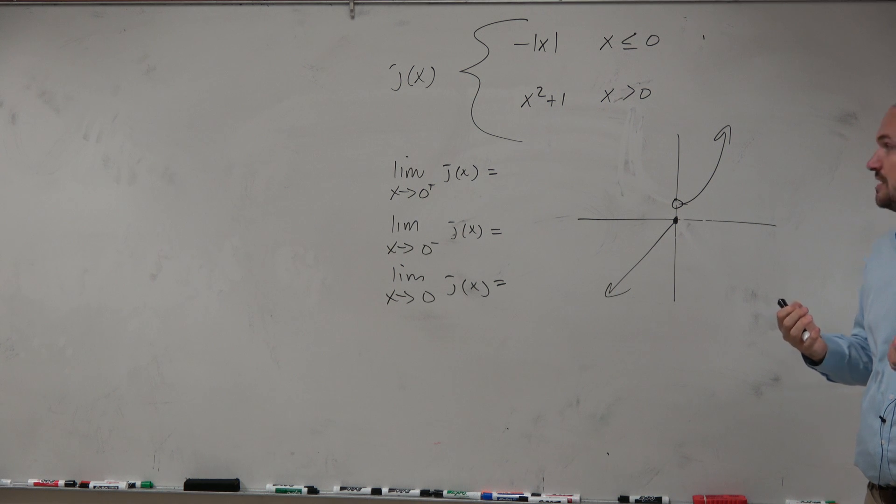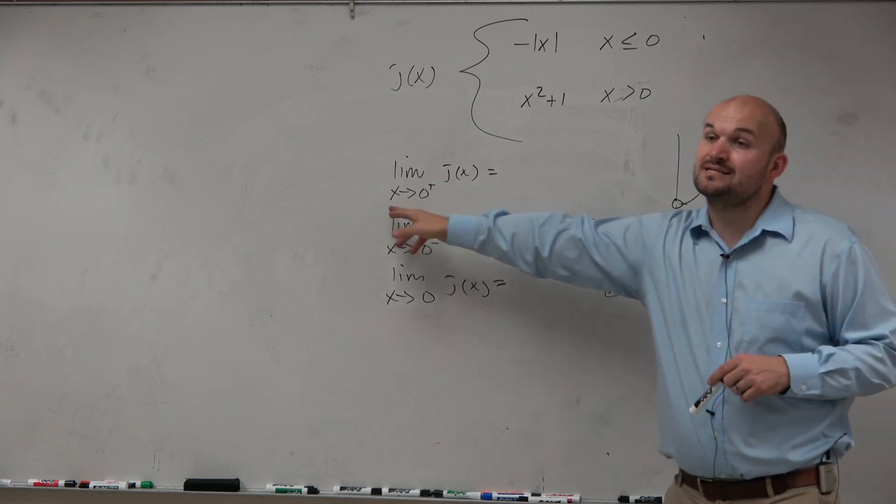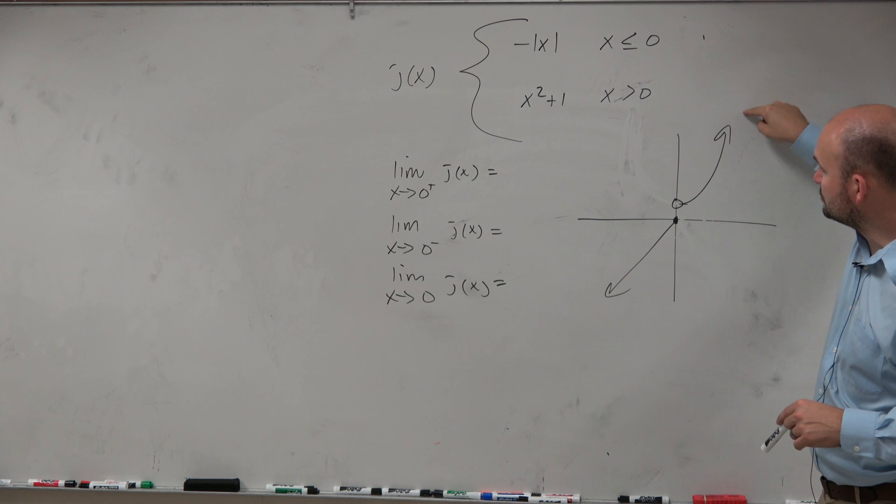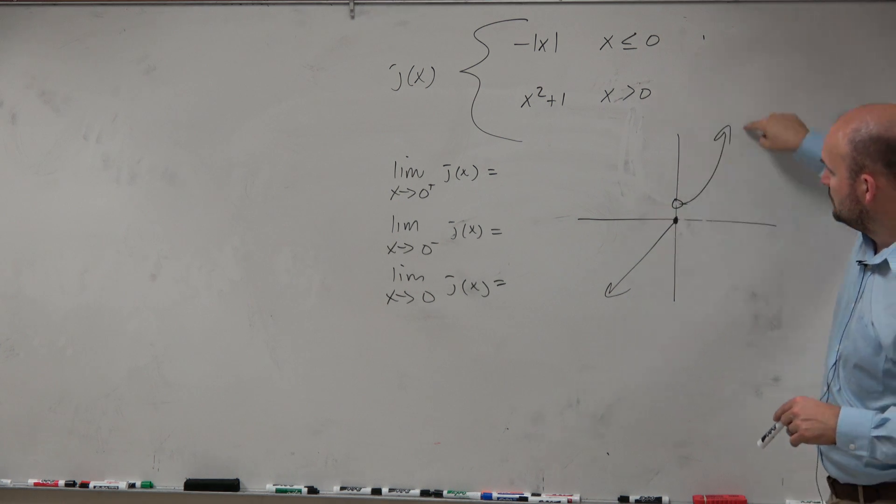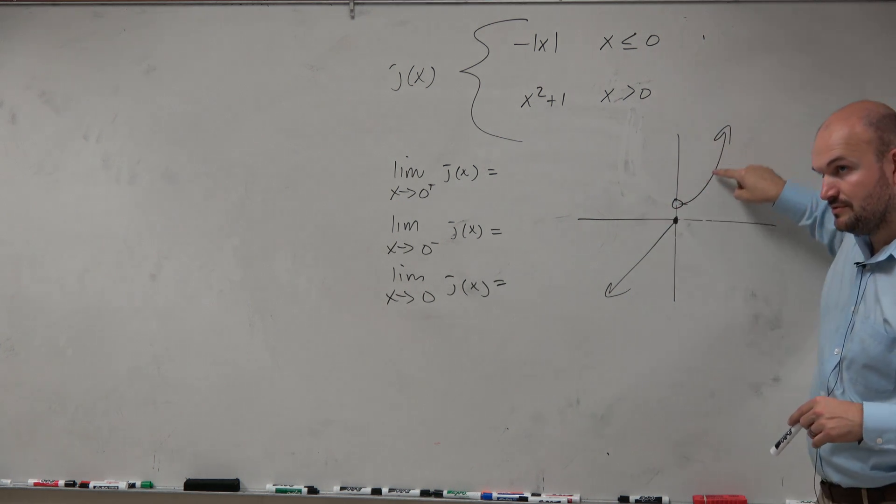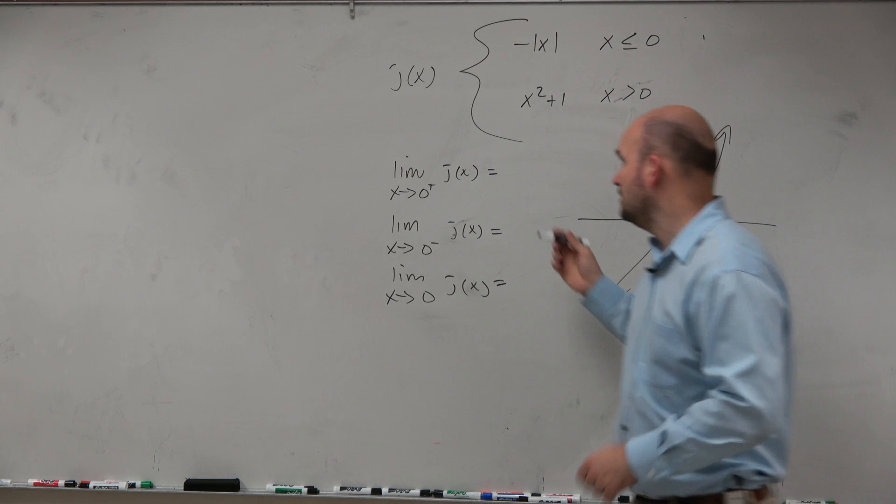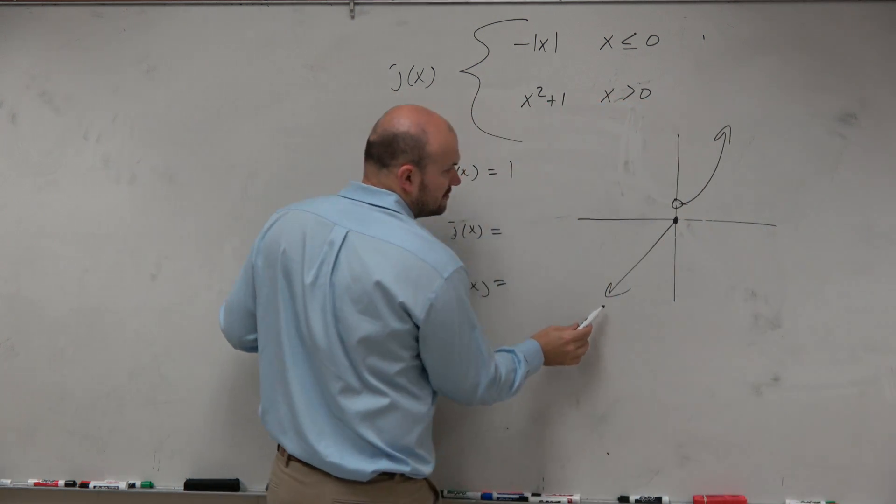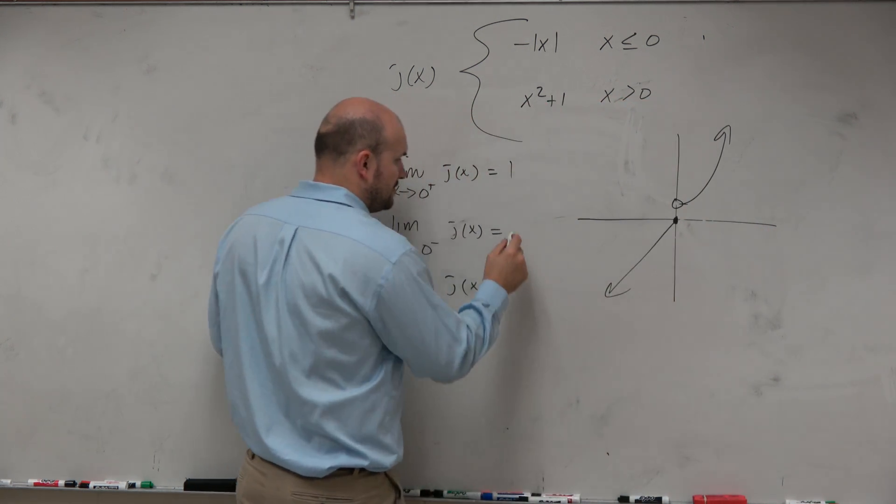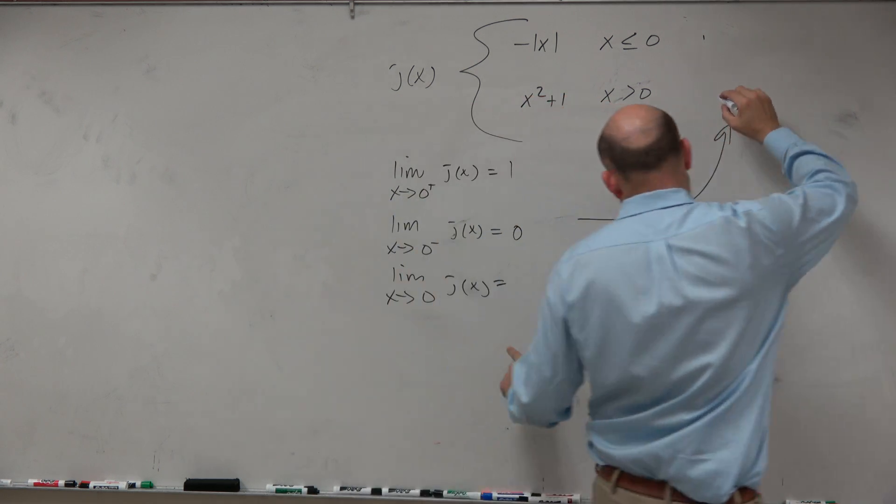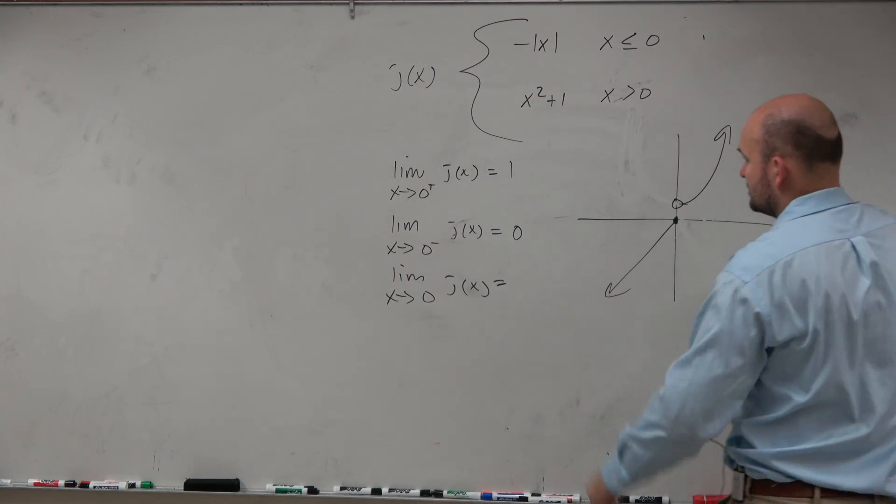So now let's go and talk about our limits. So as x approaches 0 from the right, we are approaching what value? What value are we approaching from 0 to the right? 1. What about 0 from the left? 0. What about from the left and the right? Does not exist.